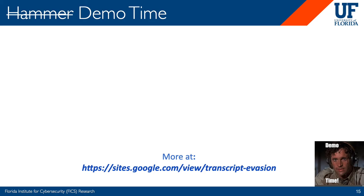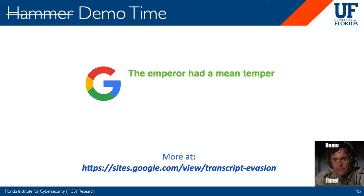Now I'm sure some of you are wondering what the audio actually sounds like — it's demo time. I'm going to play a benign audio sample for you. When this was given to Google, it output the correct transcription: 'the emperor had a mean temper.' Now we took this audio file and perturbed it. The difference between the original and the perturbed audio sample is almost inaudible. However, when we gave this perturbed sample to Google, it output 'Semper Hanuman Temple.' This illustrates how our attack maintained audio quality while still successfully fooling the model.